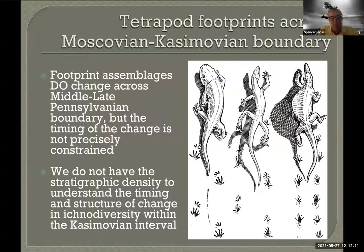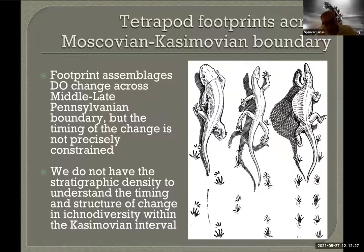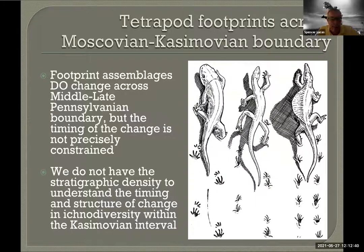We have very few definitively Casimovian track sites, but by the time we get to the Gzhelian, we have a very different footprint fauna. That footprint fauna reflects the diversification of amniotes — one of the track makers is an araeoscelid, one of the earliest true reptiles, and the other is a pelycosaur. These are tracks we first find in the late Pennsylvanian, and they're very common in the early Permian track record as well.